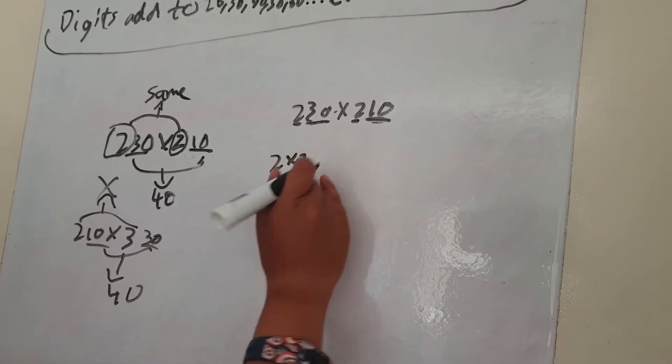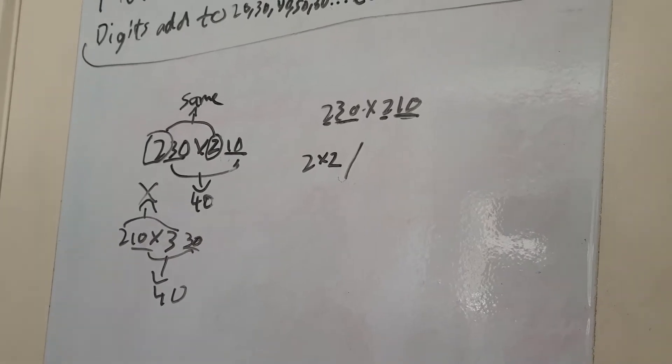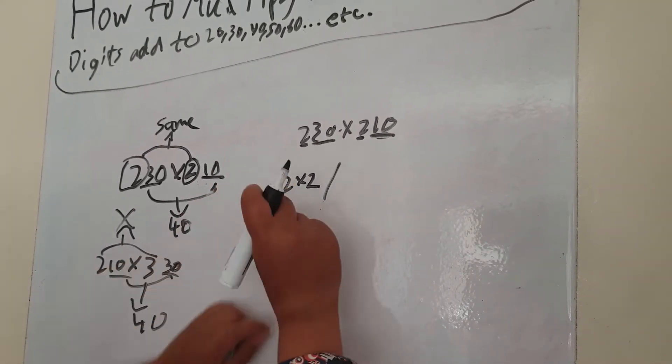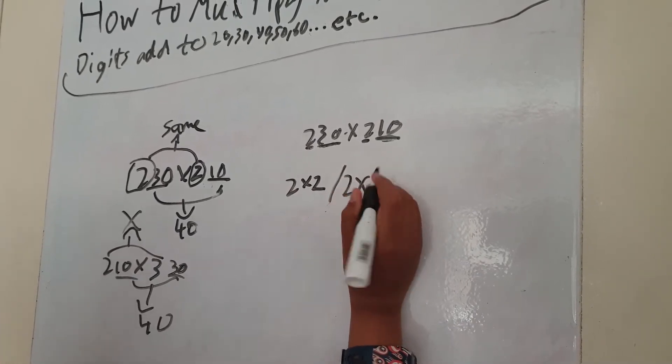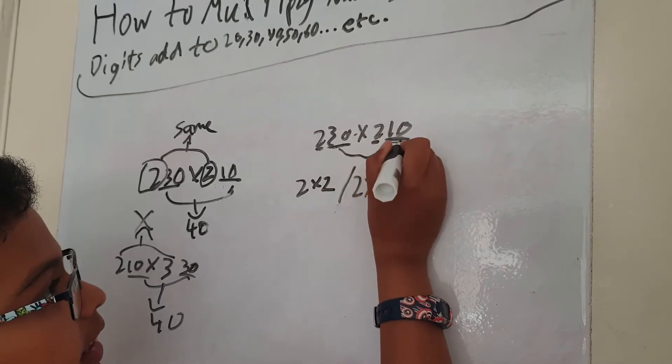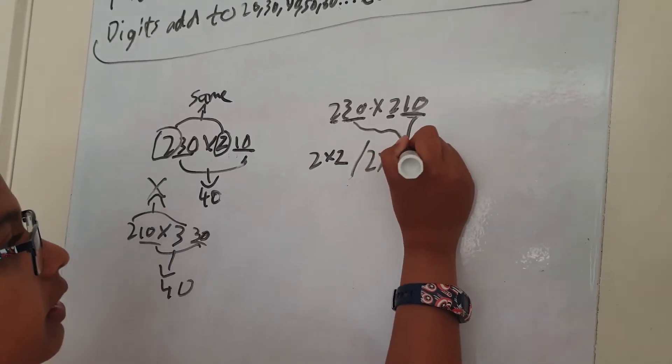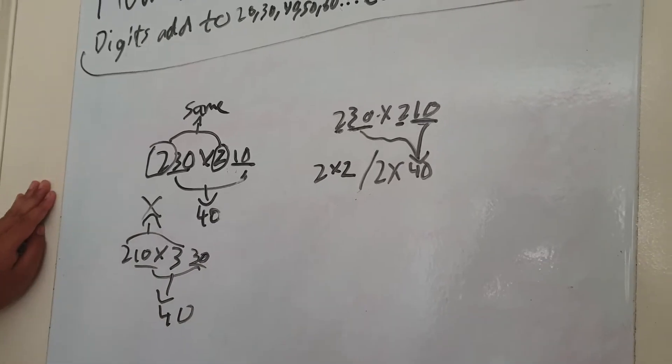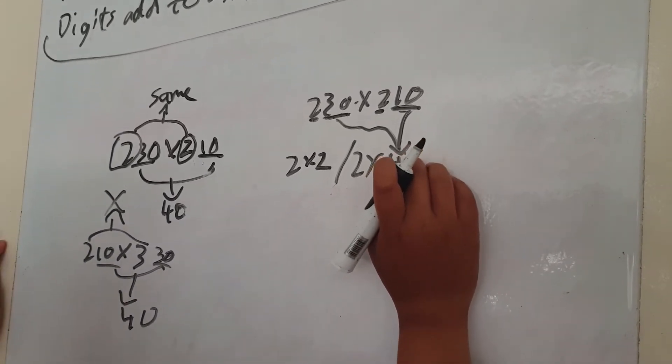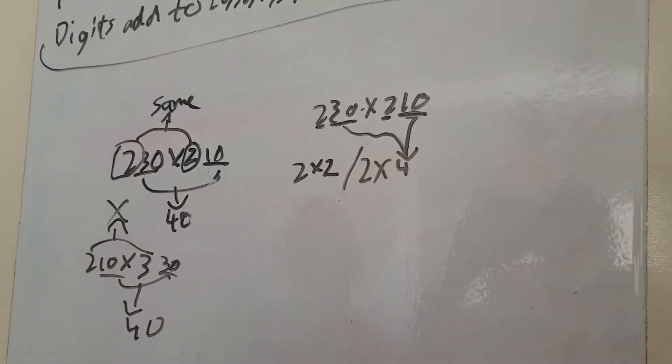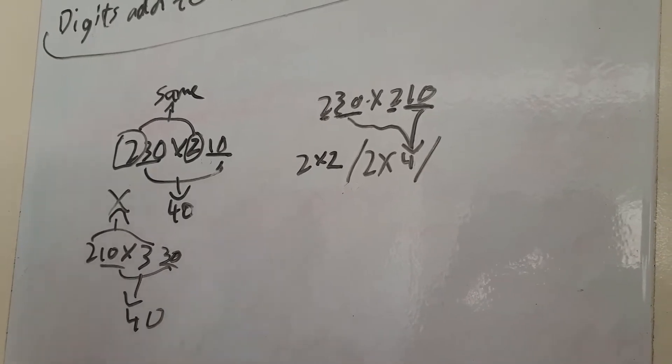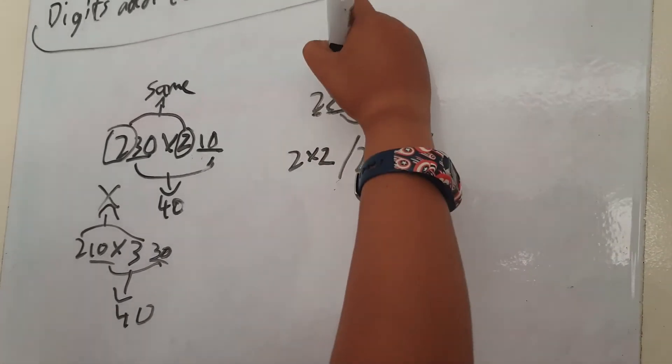Next, what you have to do is you have to do that number again, the starting number, times whatever these two add up to. So this and that add up to 40, but you have to take away the zero. And then you put a slash, and then all you have to do is multiply these two digits together.